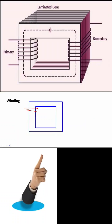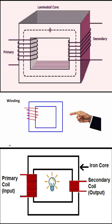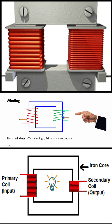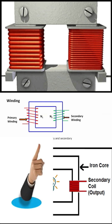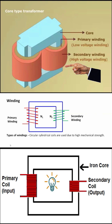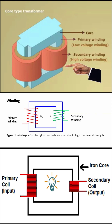This is a core, and this is a winding. Number of windings: winding one is the primary winding, denoted by n1, and secondary winding is denoted by n2. Types of winding: circular cylindrical coils are used due to high mechanical strength.